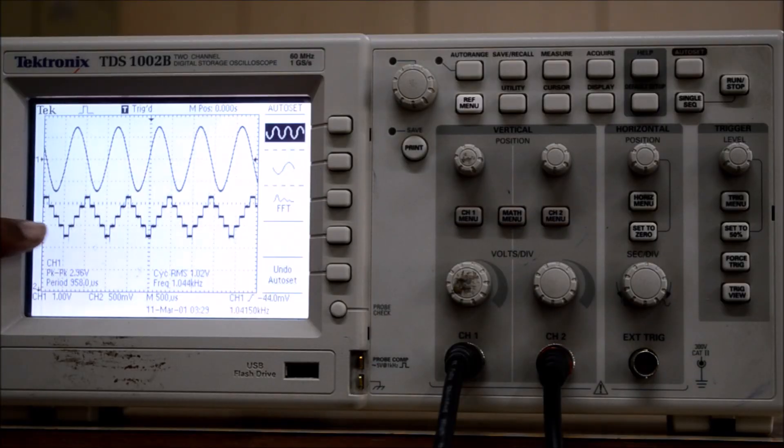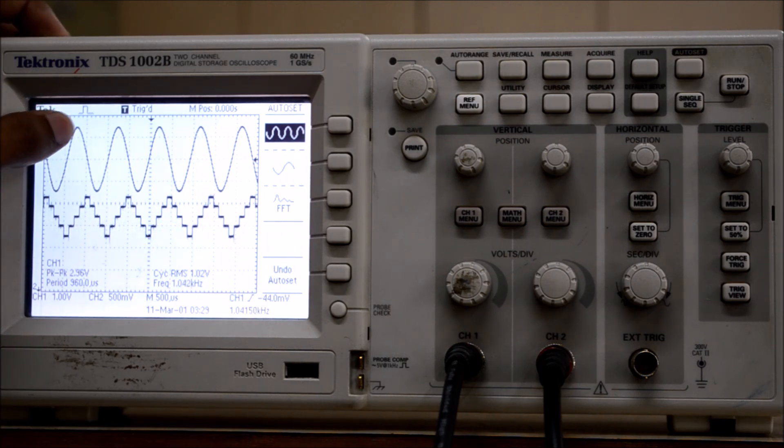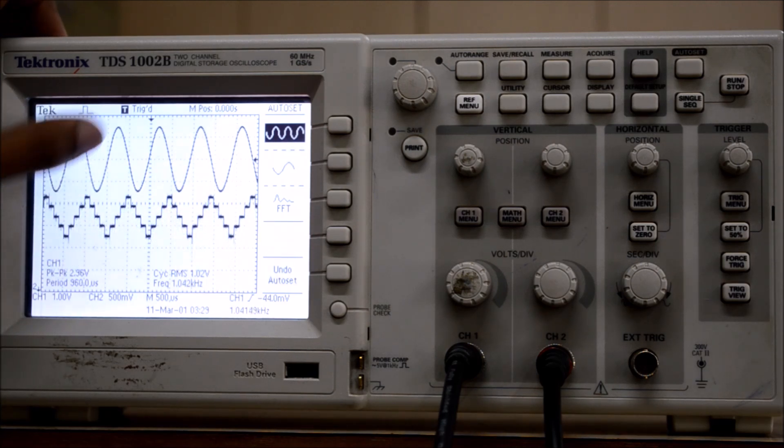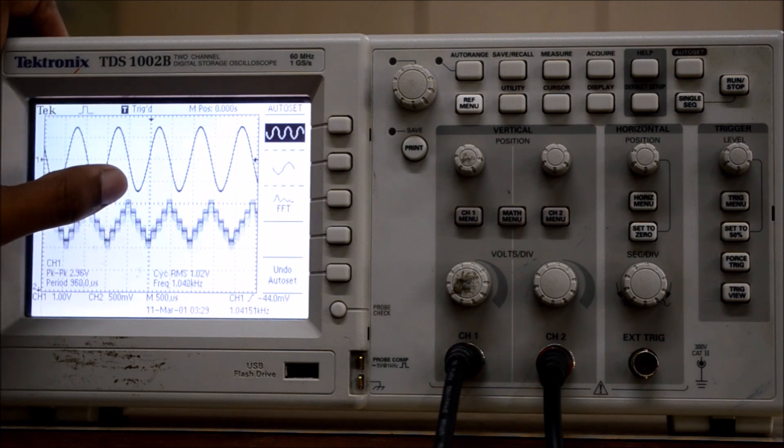Now observe the DAC output along with the sine input waveform. As we can see, as the waveform goes from positive peak to negative peak, the DAC output decreases. Correspondingly, as it moves from negative to positive, the DAC output is increasing.